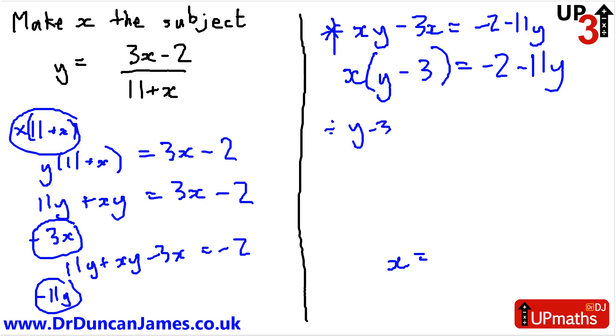Divide by y minus 3. So that means that x equals minus 2 minus 11y divided by y minus 3. And that's the final answer.